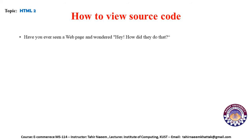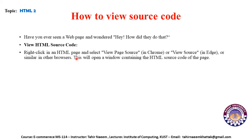To view source code — have you ever seen a webpage and wondered how they did it? You can view HTML source code by right-clicking on the HTML page and selecting 'View Page Source' in Chrome, or 'View Source' in Edge, or similar options in other browsers. This will open a window containing the HTML source code of the page.